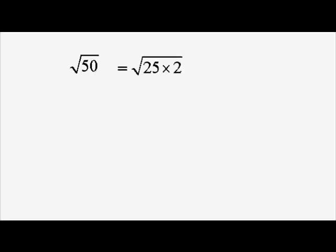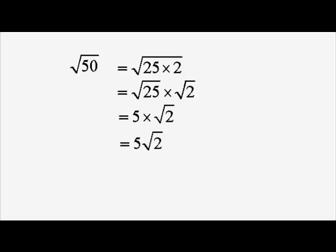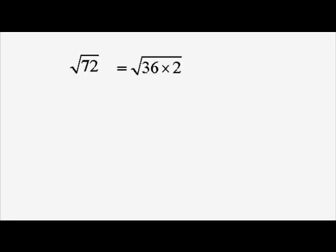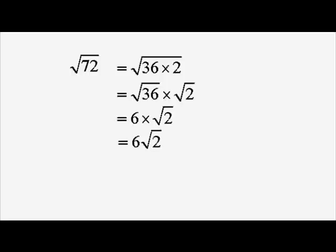Let's look at another example: root 50. Root 50 is root 25 times 2. Since 25 is a square number, that enables us when we split the square roots to write root 25 as 5. So root 50 is the same as 5 root 2, and that's the simplified form. Another quick example: root 72 is root 36 times 2, which is root 36 times root 2, which is 6 times root 2, or 6 root 2. That's also in simplified form.